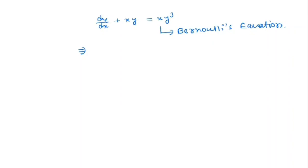Dividing both sides by y³, we get y to the power minus 3 · dy/dx plus x · y to the power minus 2 is equal to x. Now we make a change of variable, so let y to the power minus 2 equal u.